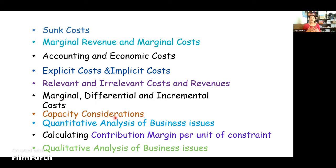Capacity refers to how much a factory can produce. Suppose it can produce 5,000 units and it's at present producing only 3,000 units. That means 2,000 units of capacity is lying idle. So that capacity consideration is very important when you apply marginal analysis or when you are doing questions on marginal analysis.